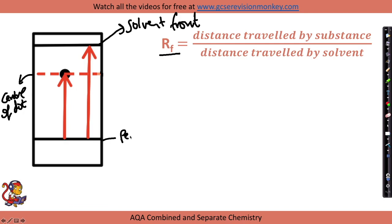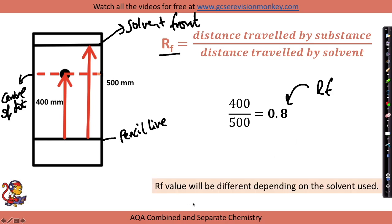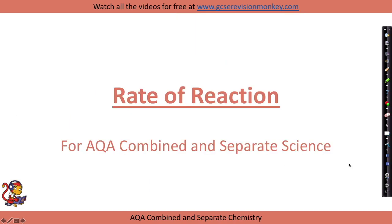The baseline we use is our pencil line where the dye started. We measure the distance travelled by the substance and the distance travelled by the solvent. For example, if the distance travelled by the substance was 400 mm and the distance travelled by the solvent was 500 mm, then we do 400 divided by 500 to get an RF value of 0.8. Note that the RF value will be different depending on the solvent used — for example, using ethanol instead of water would give a different value.